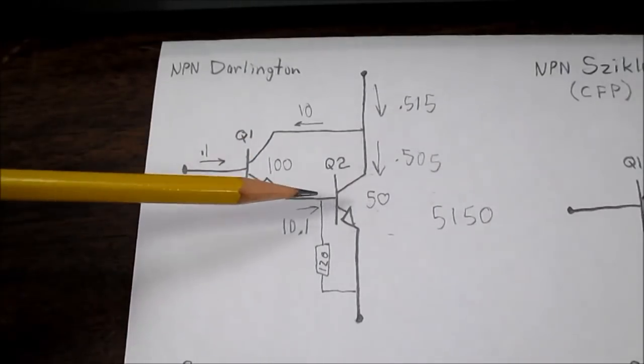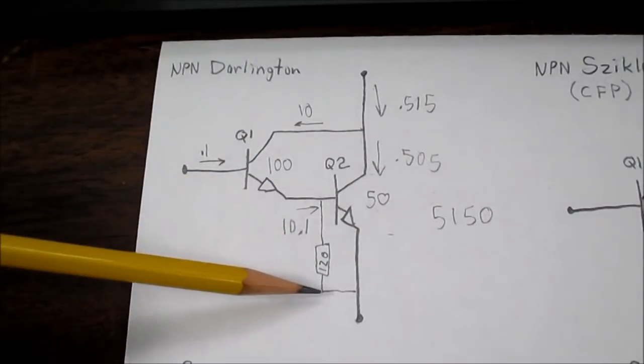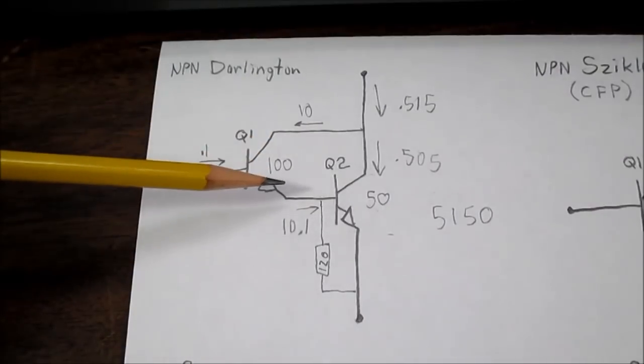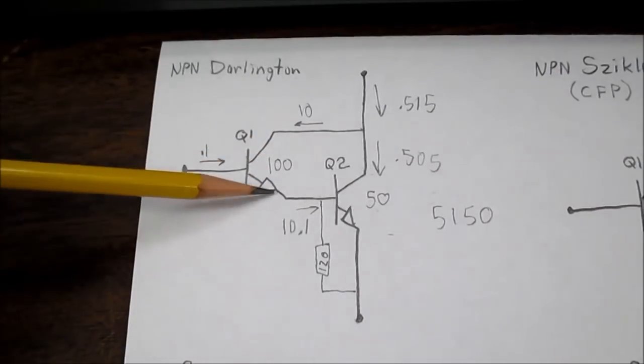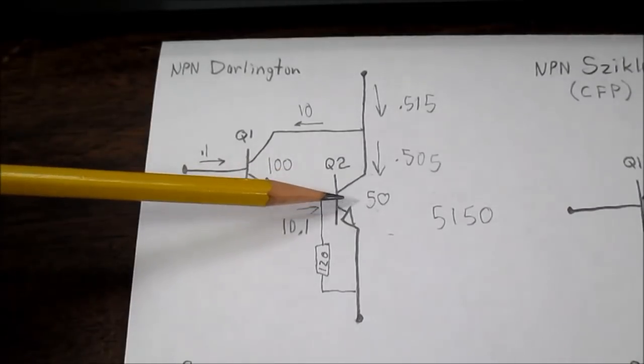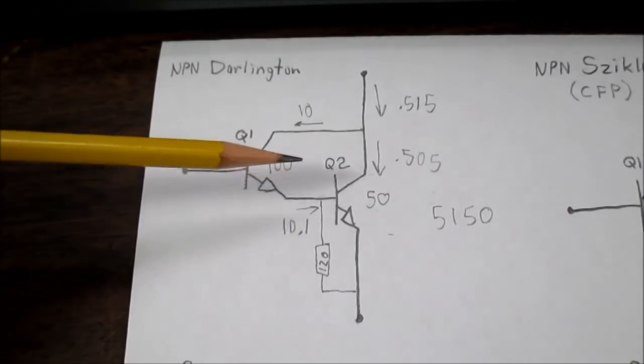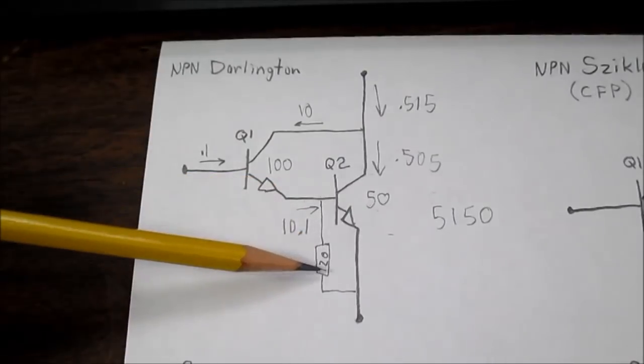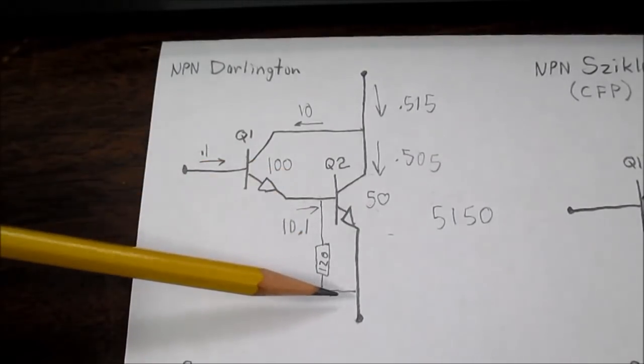Now if you watched my last video where I talked about adding this speed-up resistor, what happens is when this transistor turns off, there's a little bit of charge remaining here that keeps this transistor on and it slows it down. So if we add a resistor here, that would drain off that charge.